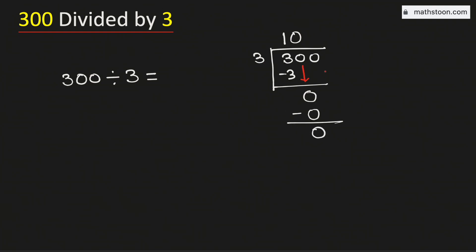Again 0 is less than 3 and we have 0 to bring down here. Again using the same rule, we know that 3 times 0 is 0. Subtract, we get 0.